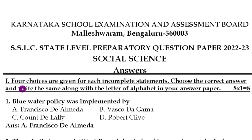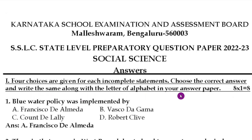First main: four choices are given for each incomplete statement. Choose the correct answer and write the same along with the letter of alphabet in your answer paper. They have given eight questions, each carrying one mark, for a total of eight marks.